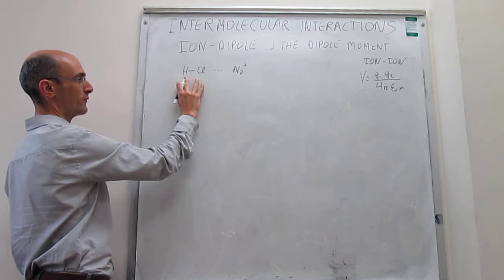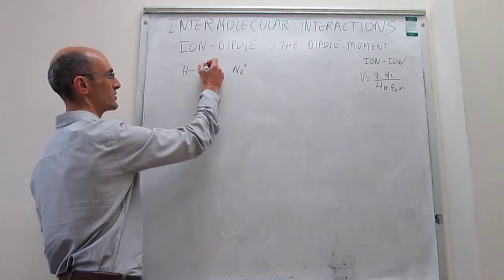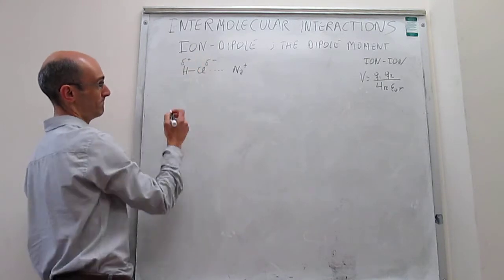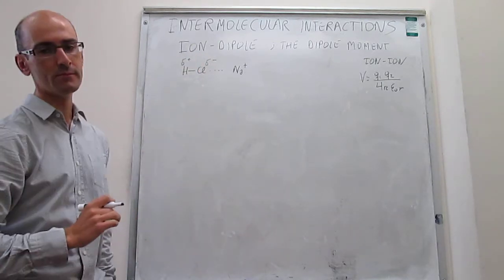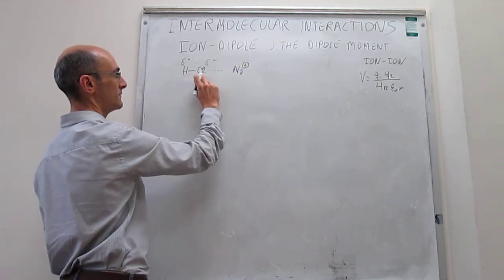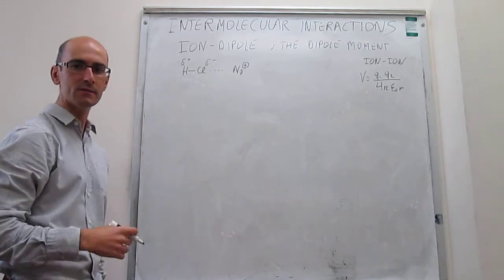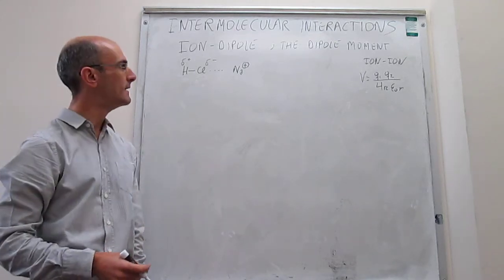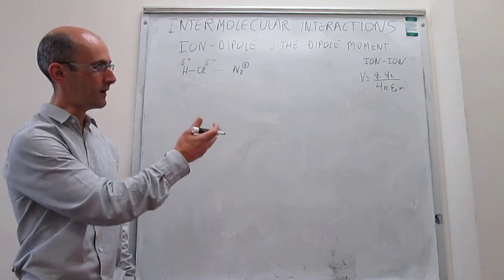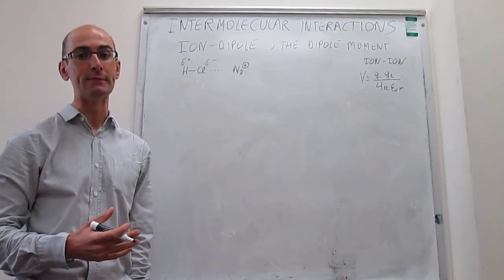HCl is not a fully formed ion; it doesn't have permanent full charges, but it has partial charges. The chlorine atom has a partial negative charge and the hydrogen atom represents the positive end of the molecule. So here we have the attraction of something that has a negative pole with a positive ion — that should be stabilizing. We can describe this with partial charges in Coulomb's law, but a more traditional way is to invoke something called the dipole moment.